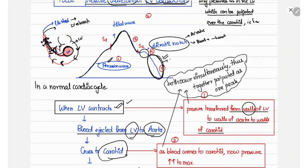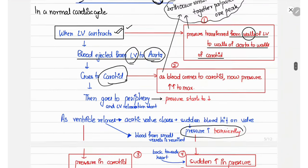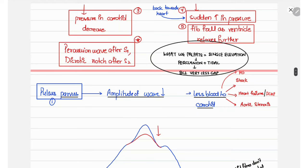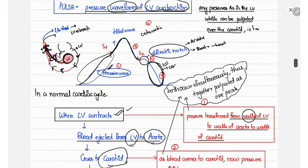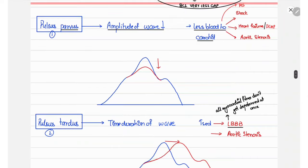This is the normal catacrotic pulse. Normally, when we place a finger on the carotid, we feel a single elevation, which is a combination of the percussion and tidal wave. It is felt as a single elevation because there is a very small time gap between the percussion and tidal wave, so we palpate them as one wave.